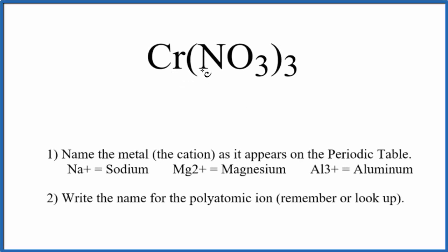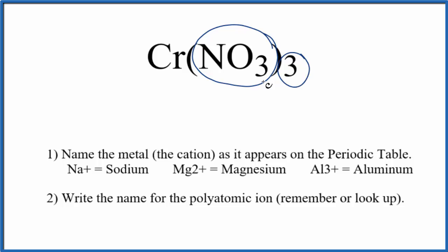To write the name for Cr(NO₃)₃, we first need to recognize this NO₃ here. It's the nitrate ion — it's a polyatomic ion. In fact, we have three nitrate ions here.